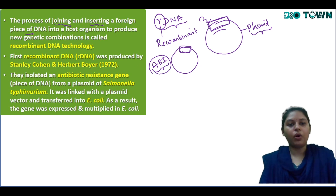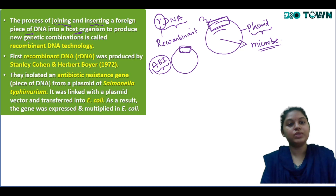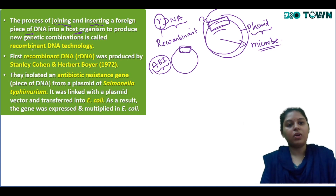This foreign piece of DNA — the ab1 gene — is inserted into a host organism, which is the microbe containing the plasmid, to produce new genetic combinations. This new genetic combination is what we call recombinant DNA technology.